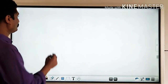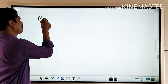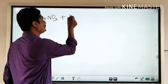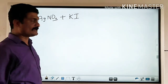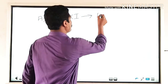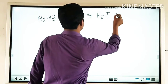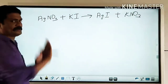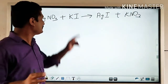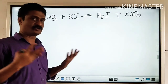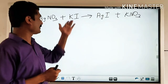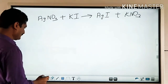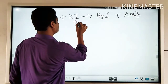For example, when 1 mol of AgNO3 is treated with 1 mol of potassium iodide (KI) solution, it forms 1 mol of AgI and KNO3. Here 1 mol of AgNO3 reacts completely with 1 mol of KI, so there is no excess AgNO3 or KI remaining in the reaction mixture.